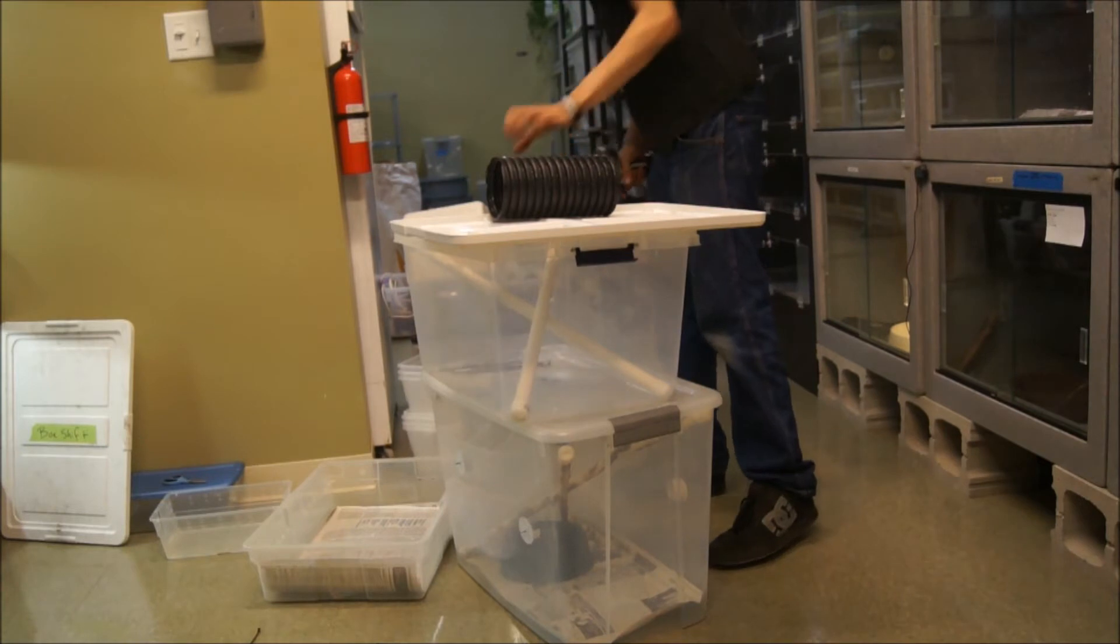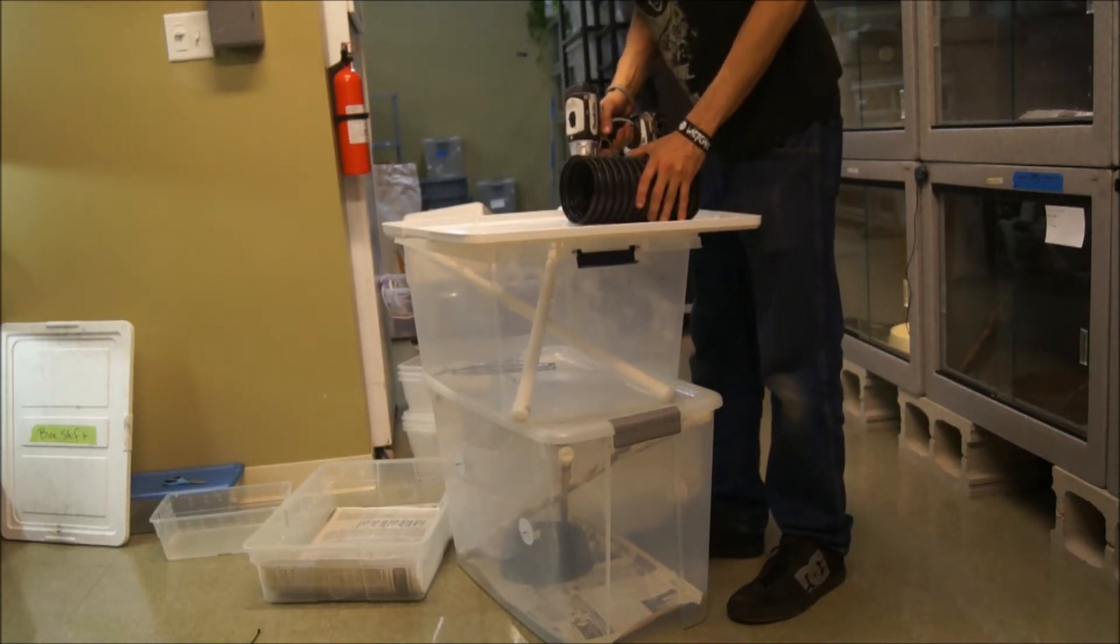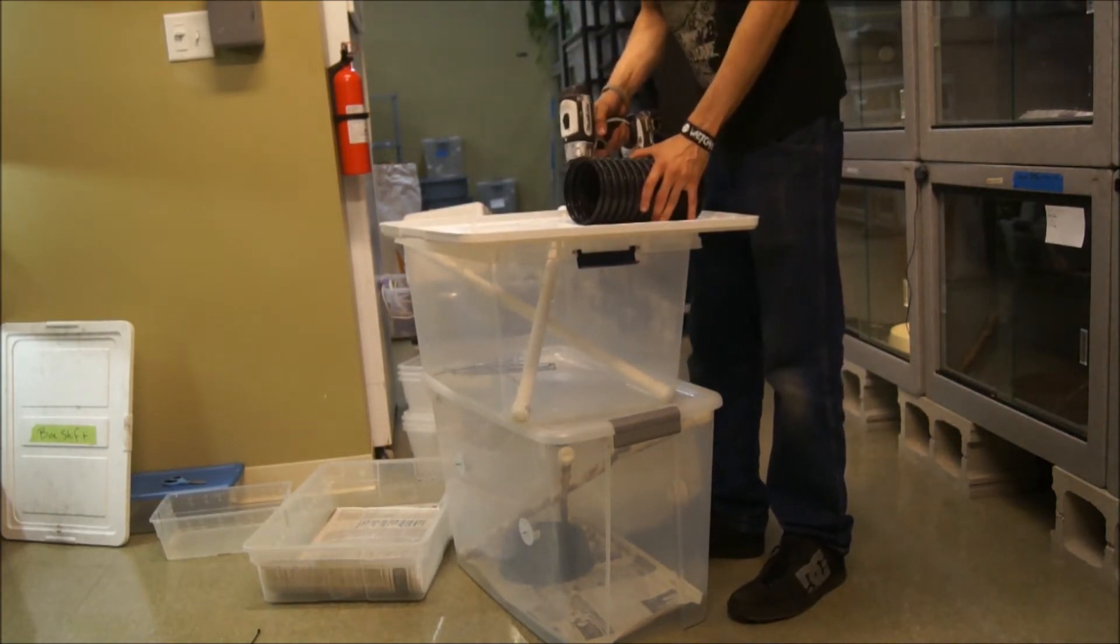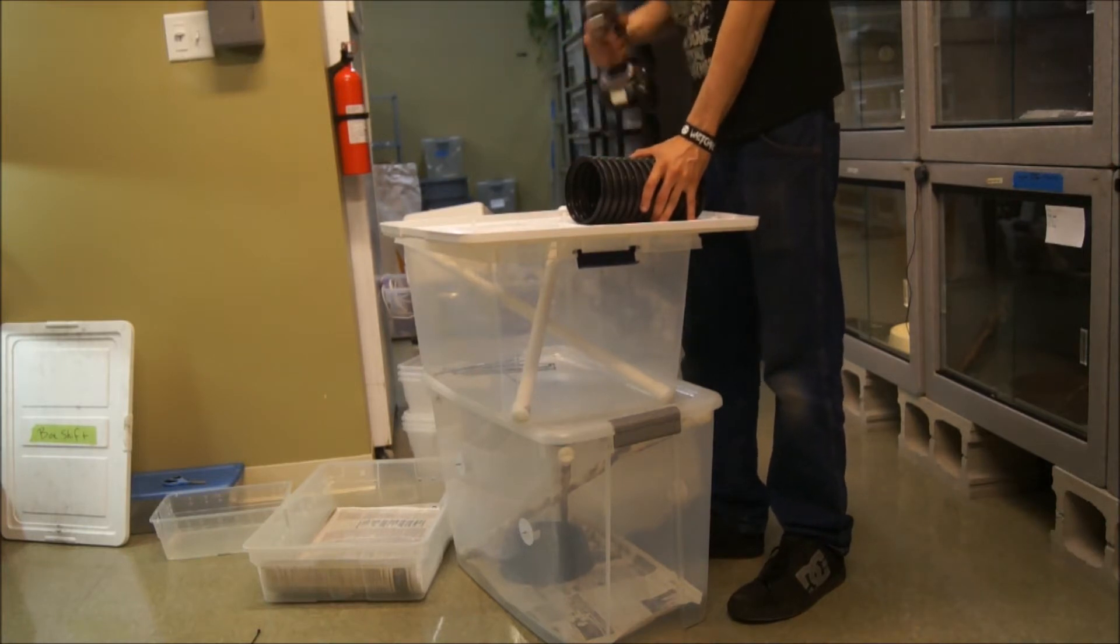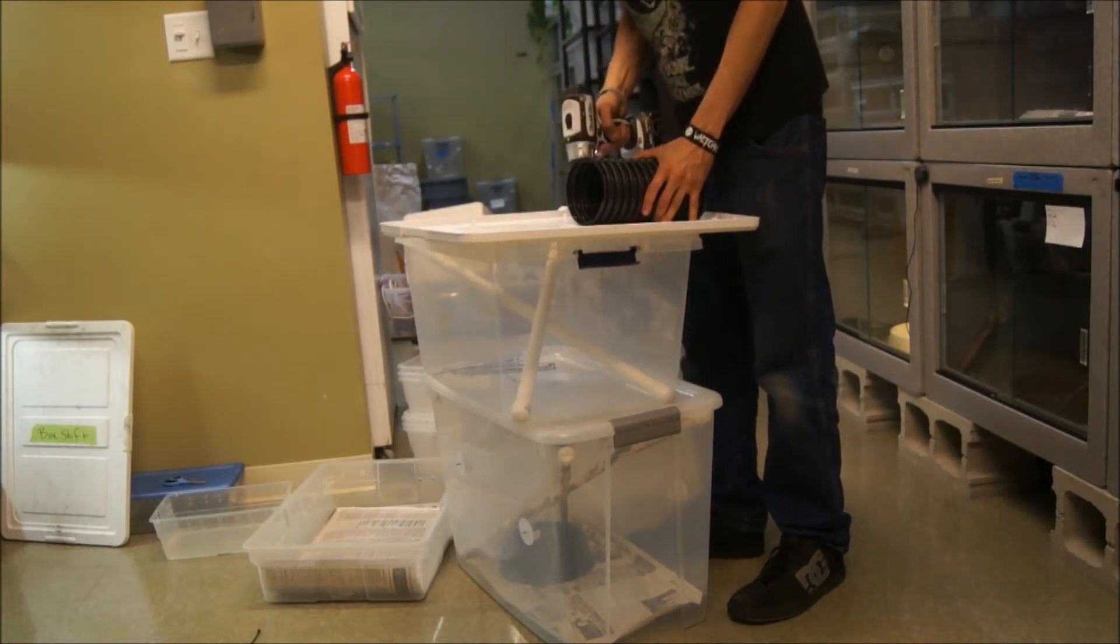Basically what you're just going to do is go through and drill out sections. Usually I do on one side of the cage just so you can have a darker side and a lighter side. And just drill out.